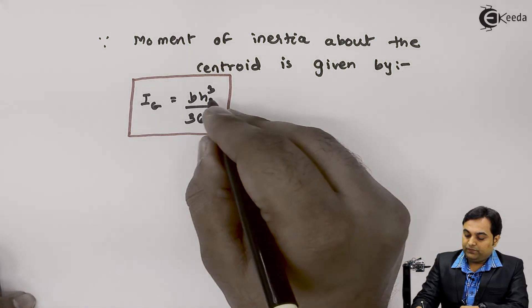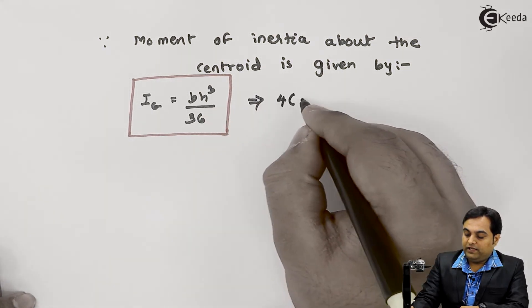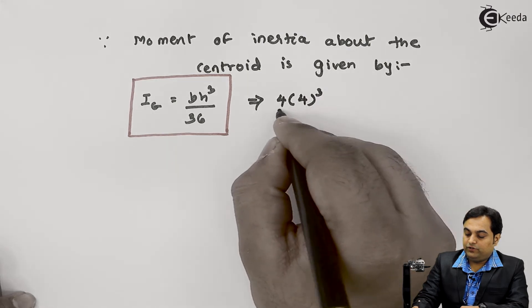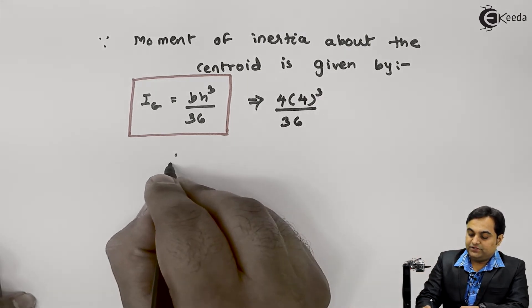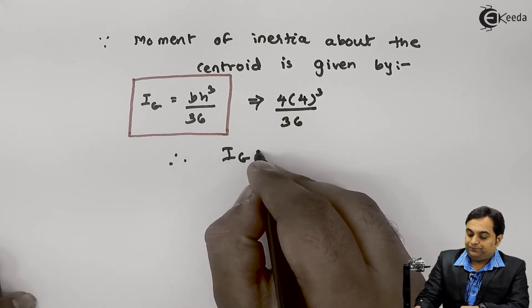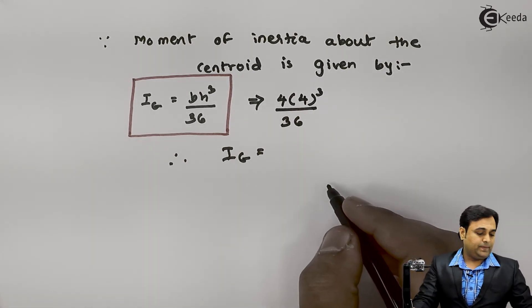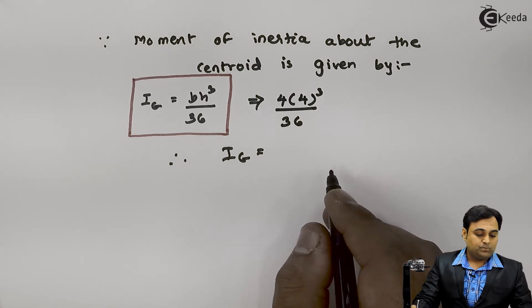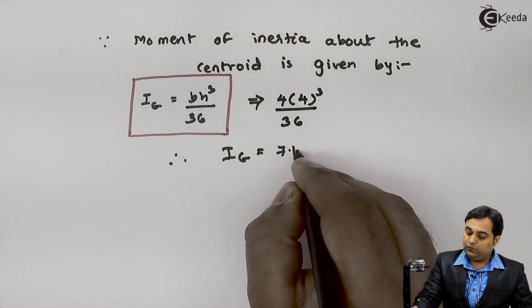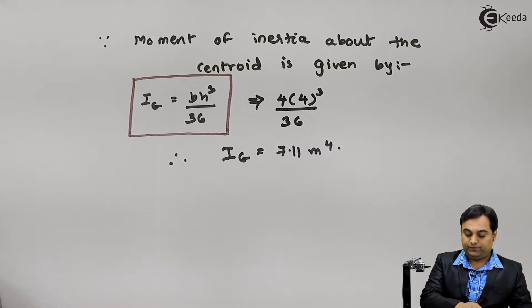Substituting the values: B is 4 and H is 4, so I_G equals 4 times 4³ divided by 36. Therefore, the moment of inertia comes out to be 7.11 meters to the power of 4.